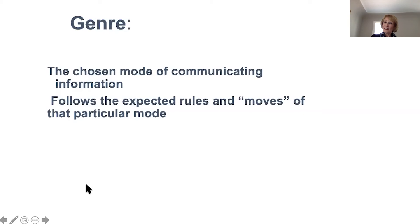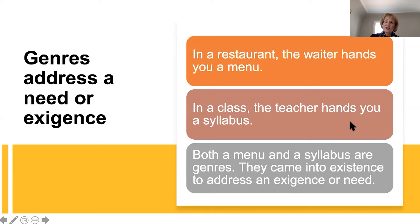Genres address a need or an exigence. If you go into a restaurant, the waiter will hand you a menu — not a letter asking you to contribute money to an animal shelter. In a class, the teacher will hand you a syllabus, not a menu. Both the menu and the syllabus are genres. They came into existence to address an exigence or need: the menu to show you what you can choose to eat, and the syllabus to give you an idea of what is expected in a particular class. Those came into existence because they fulfilled a need.